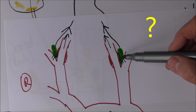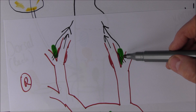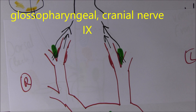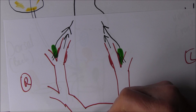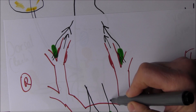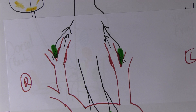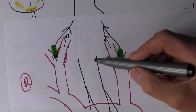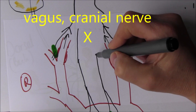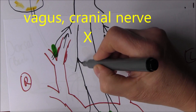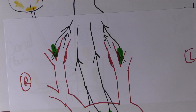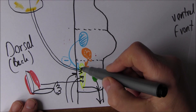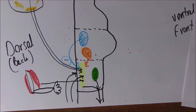The ninth cranial nerve is the glossopharyngeal nerve, so sensory fibres from the glossopharyngeal nerve carry signals up to the brain. From the aortic bodies, sensory fibres travel to the medulla oblongata via branches of the tenth cranial nerve - the vagus nerve. Both the glossopharyngeal and vagal branches feed into the inspiratory centre in the medulla oblongata.